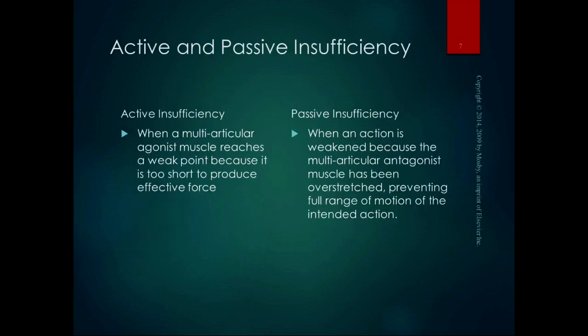The consideration for multiarticular muscles is what we refer to as passive and active insufficiency. The book spends very little time on this, but it's a concept that comes up a lot in muscle testing, muscle strengthening, and physical therapy. When we talk about insufficiency, it means decreased strength — in the length-tension graph, where the muscle is way too shortened or way too lengthened, that is where it's insufficient. Active insufficiency is when a multiarticular agonist muscle reaches a weak point because it's too short to produce effective force.